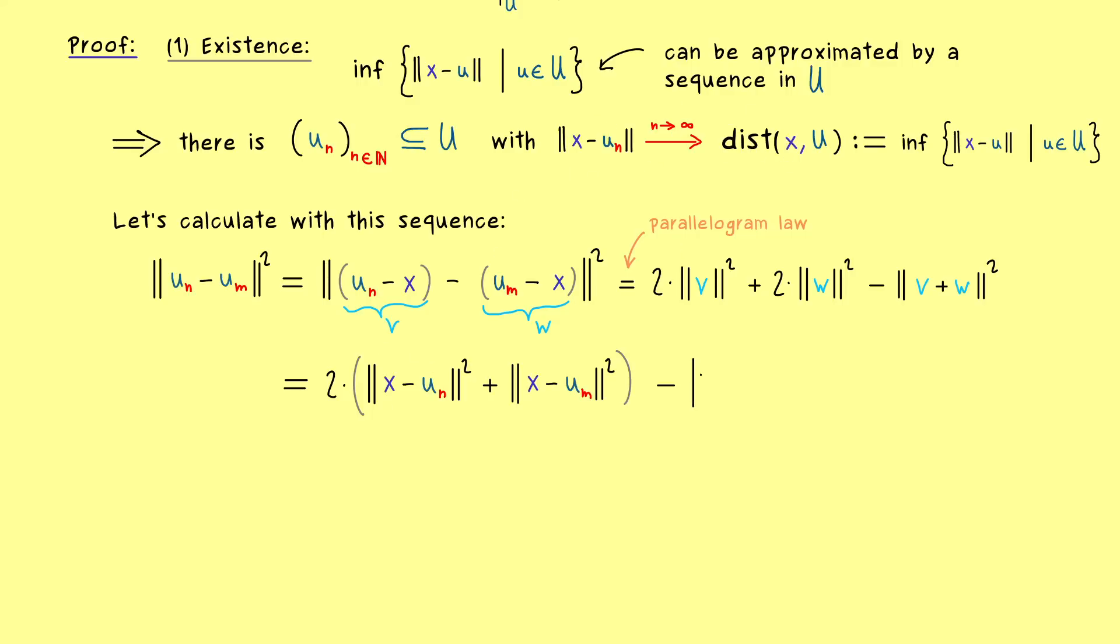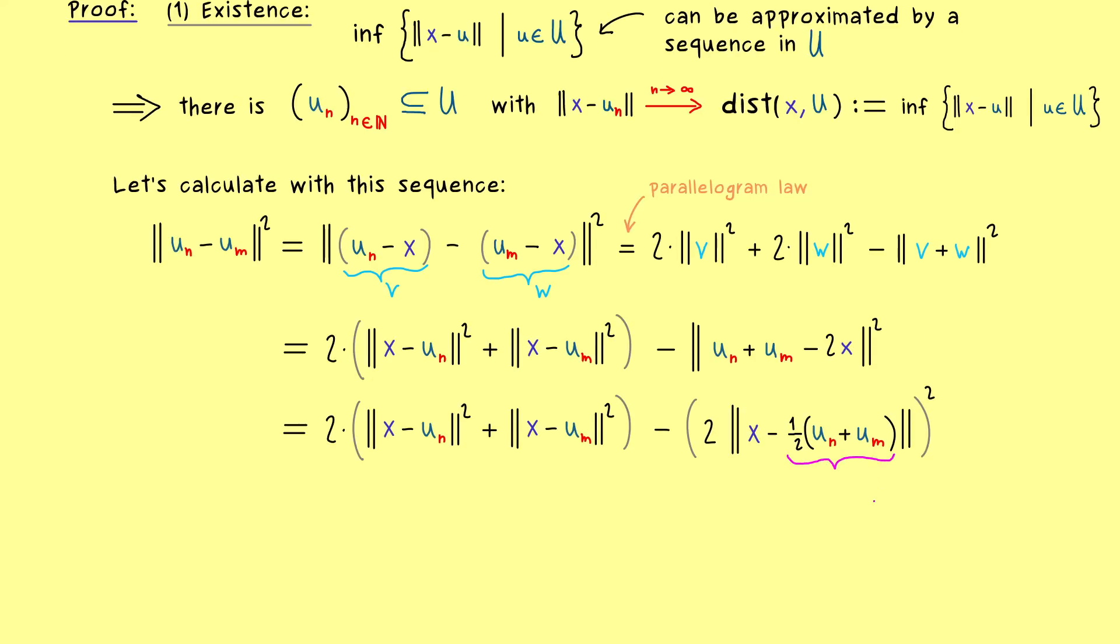Therefore the crucial question now is what happens to the last part? So v plus w is just u_n plus u_m and minus 2 times x. And naturally we can also make this nicer by bringing x to the front. And moreover we can also pull out this factor 2 from the norm. Then we just get x minus 1 half the addition of u_n and u_m. And there we have reached the point that we need our convex subset. However first we should not forget that everything here is squared as before.